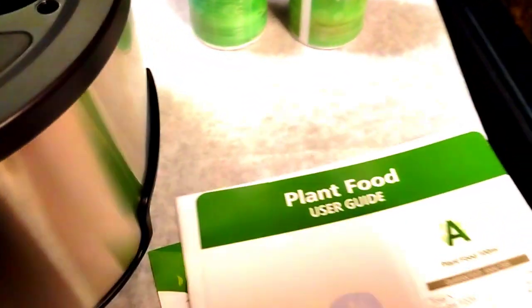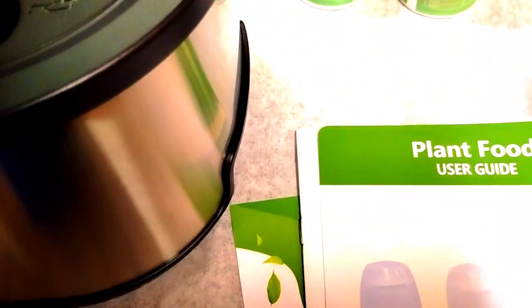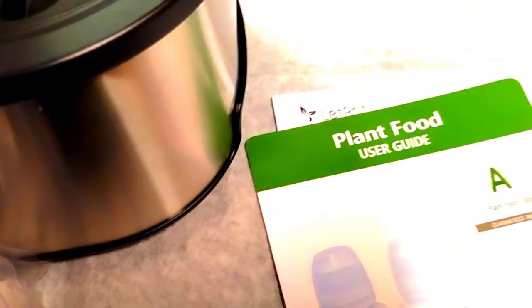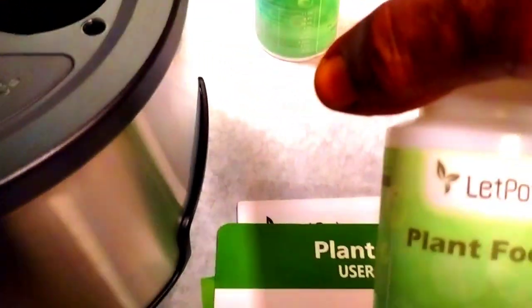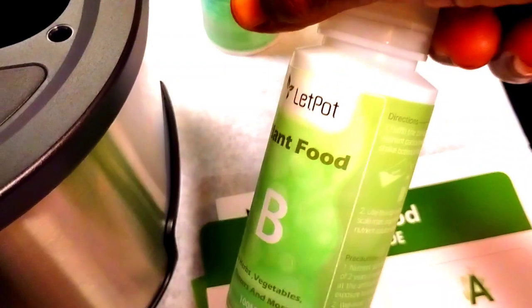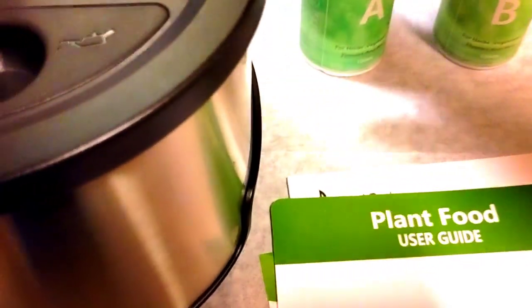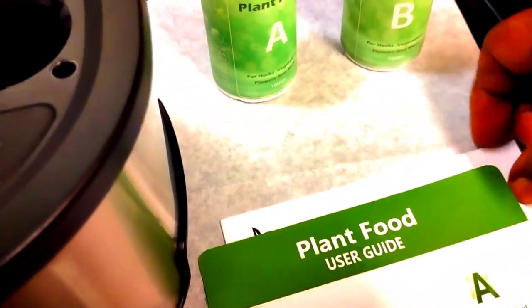And, of course, the instructions. We have plant food, plant food B, and plant food A. Chord, and, of course, the instruction manual.